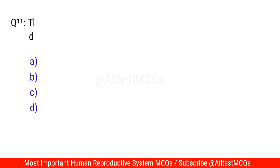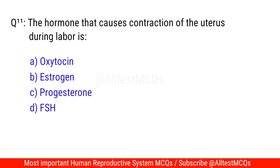Question No. 11: The hormone that causes contraction of the uterus during labor is? The right option is A. Oxytocin.